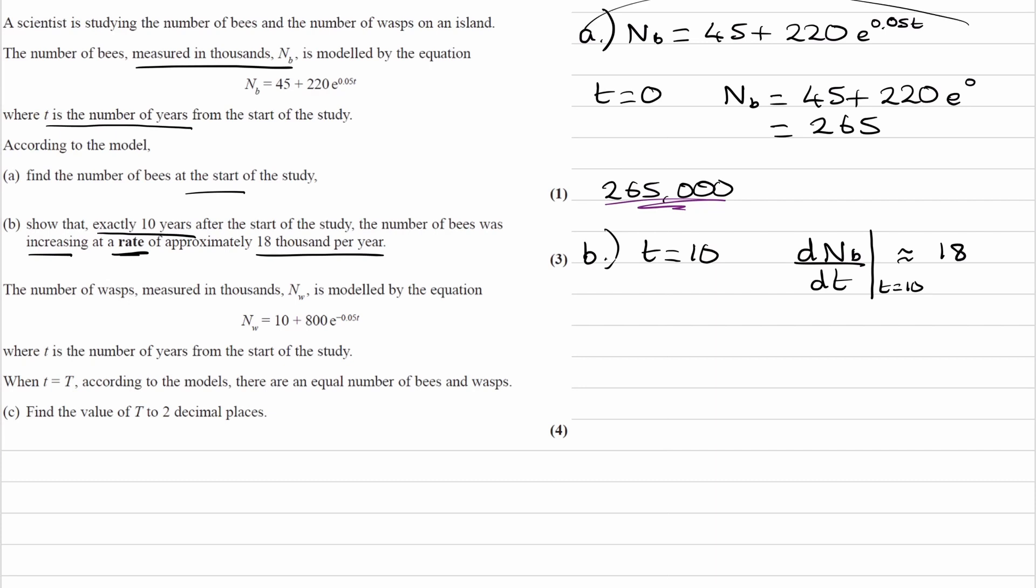You want to differentiate this equation. We know that nb equals 45 plus 220 e to the 0.05t. The differential - 45 just differentiates to make 0. And if we remember our rules for differentiating, if we have y equals e to the power of kx, the differential of this would be k e to the power of kx.